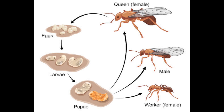Pupa. After reaching a certain size, the larva spins a silk-like cocoon around itself against a solid object, like the wall of the chamber, and pupates. During this time the body metamorphoses, changes, into its adult form.